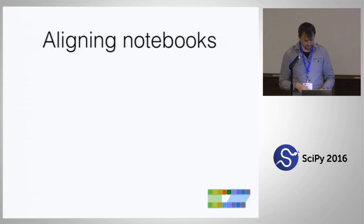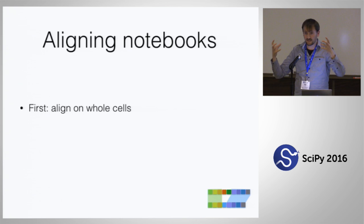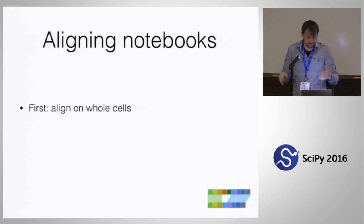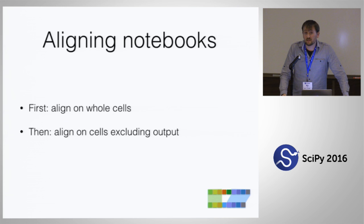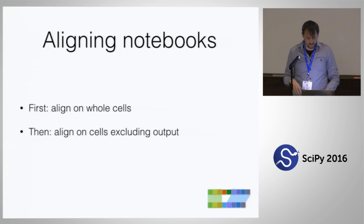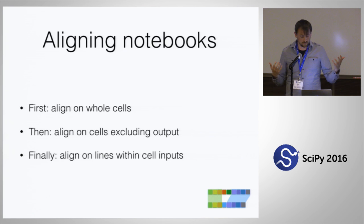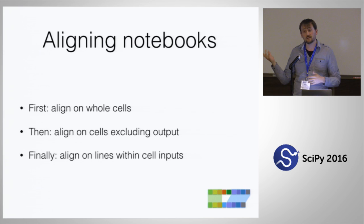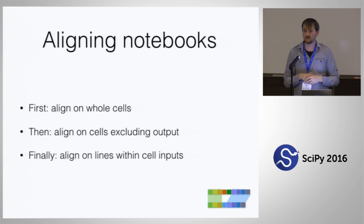When diffing notebooks, first we align and ask: is this cell, with all its input and output, exactly the same? If it is, it's the same cell. But we also do a comparison ignoring differences in output — if you took the same cell and reran it and it produced different results based on changes further up in the document, we should still identify that it's probably the same cell because the input is the same. We also align on the content of the cell's input, so just like a regular line diff does similarity comparison on individual lines that might differ a little, we also do alignment based on how similar the cell content is.